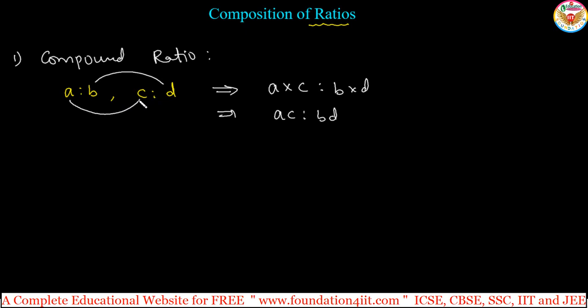Any number of ratios, all the antecedents you can multiply, consequent you can multiply, first to the second, that is nothing but compound ratio.